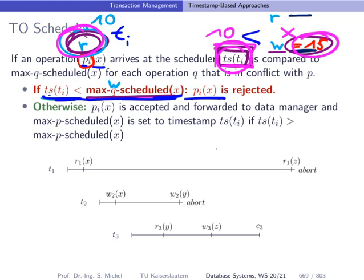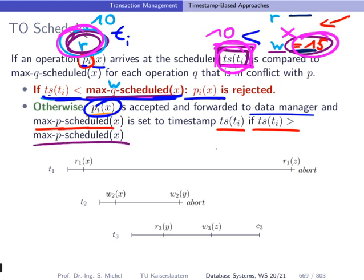If the comparison does not cause a problem, transaction I is allowed to execute its operation, which is forwarded to the data manager. Then in our scheduler we update the timestamps stored for object X: we set max P scheduled of X to the timestamp of TI, if that timestamp is larger than the previously stored max P scheduled. In our read operation example, this means updating max R scheduled.